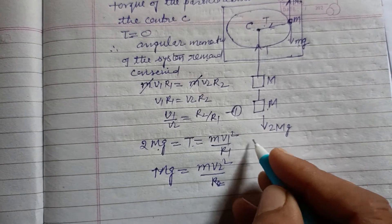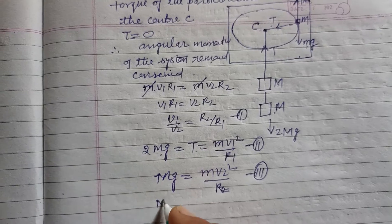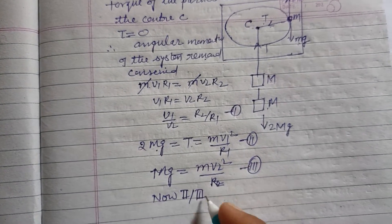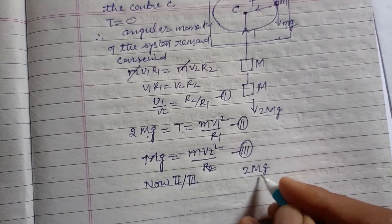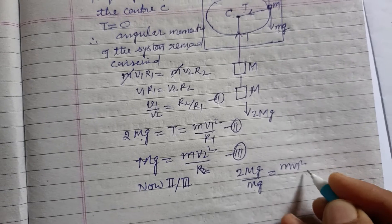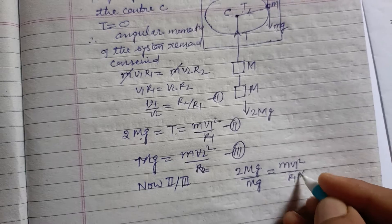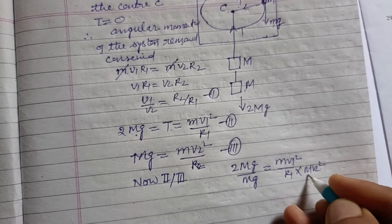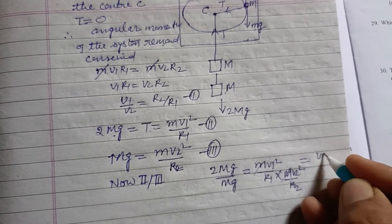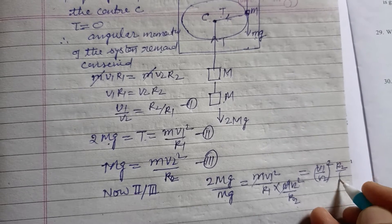So dividing this, this is second, this is third. Now, 2Mg over Mg equals MV1 squared upon R1 into R2 upon MV2 squared. M cancels, we got V1 upon V2 whole squared, R2 over R1.